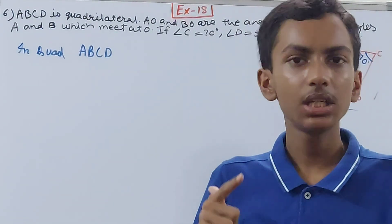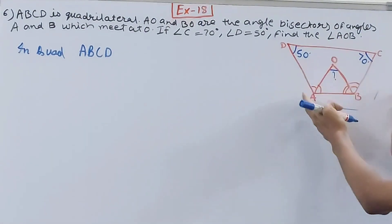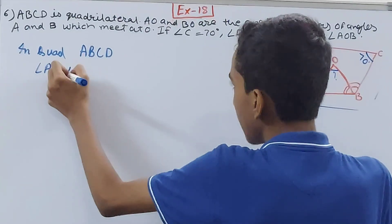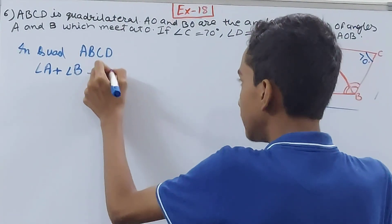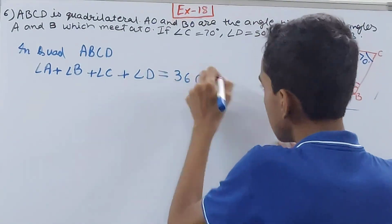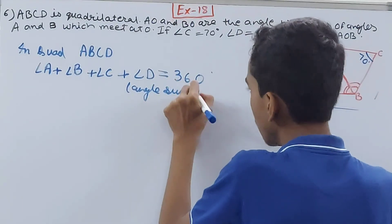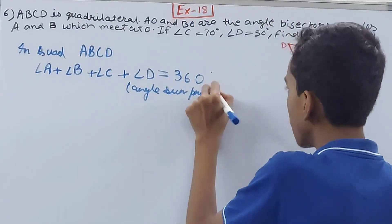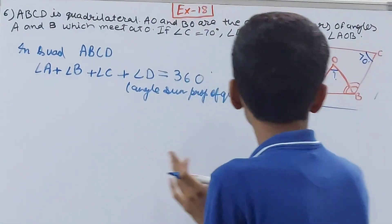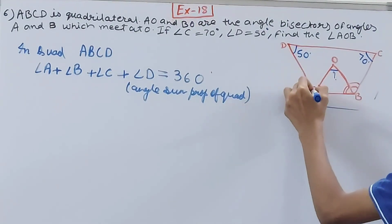The angle sum property states that the sum of all angles of a quadrilateral is 360 degrees. So angle A plus angle B plus angle C plus angle D equals 360 degrees.